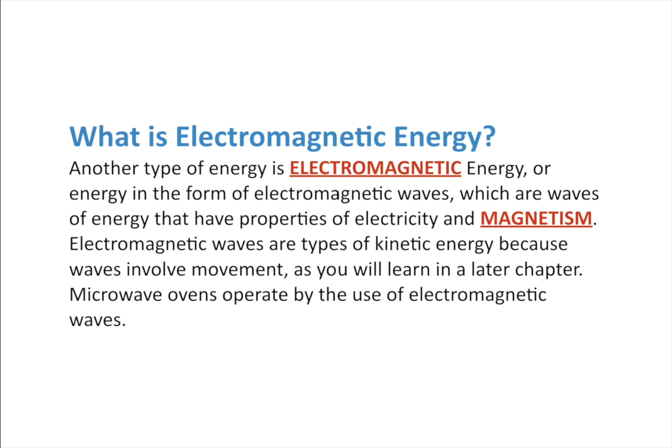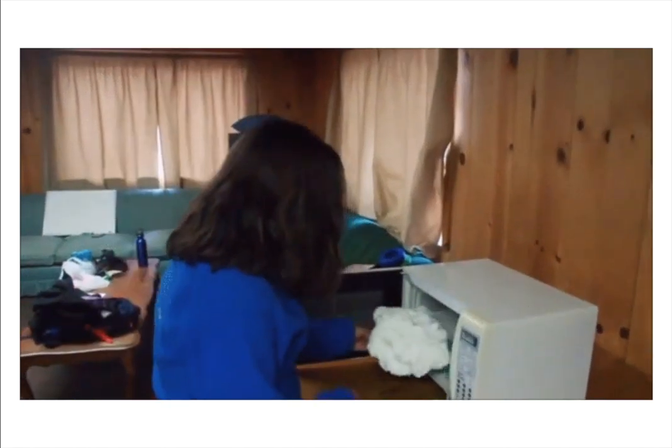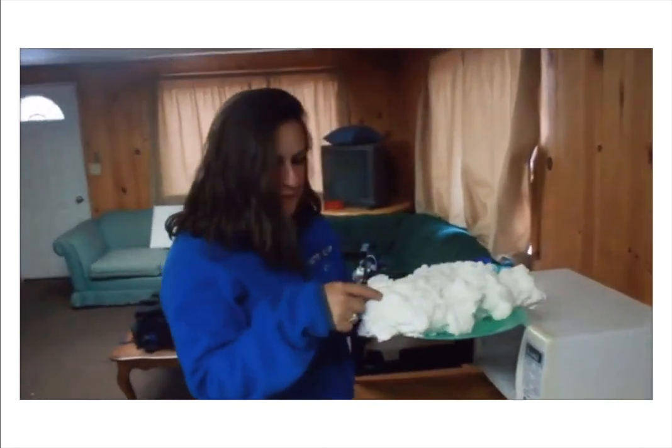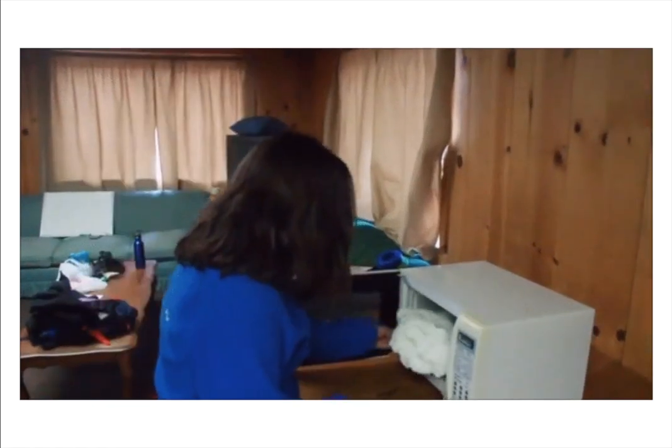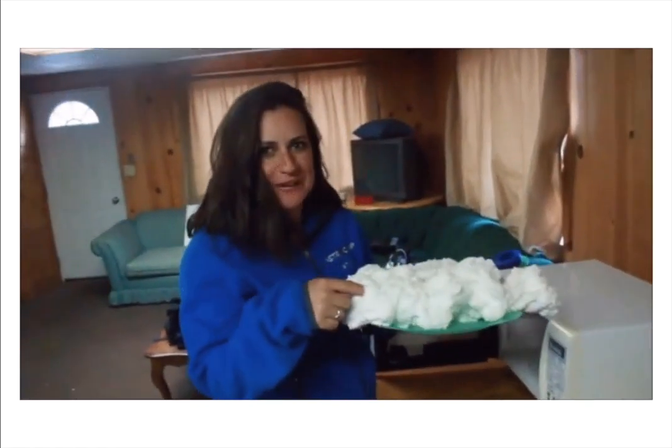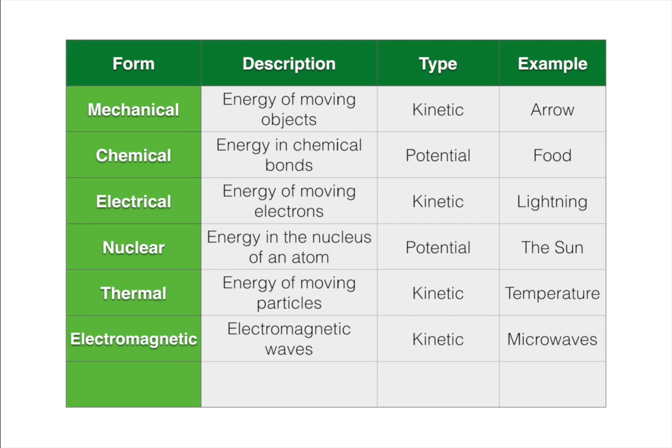Microwave ovens operate by the use of electromagnetic waves. As you can see in this picture, a bar of soap expands as microwaves are released by the generator. These microwaves hit the object and cause the particles to move faster, which makes the temperature get warmer — that's why you warm something up in a microwave. Electromagnetic energy is electromagnetic waves; it's kinetic energy, and microwaves are a great example.